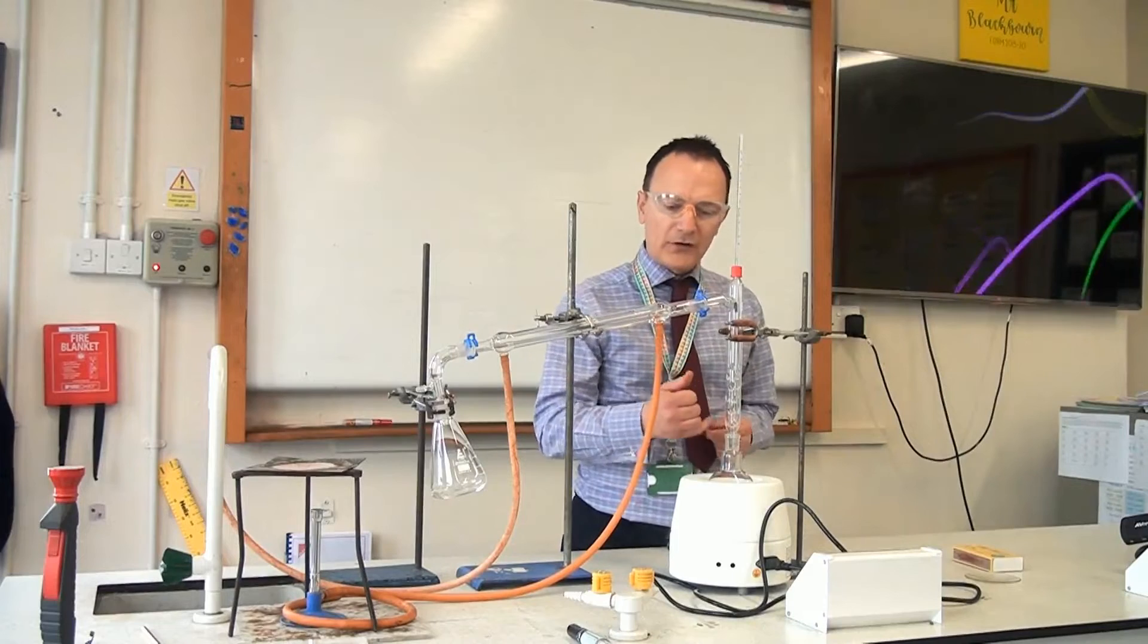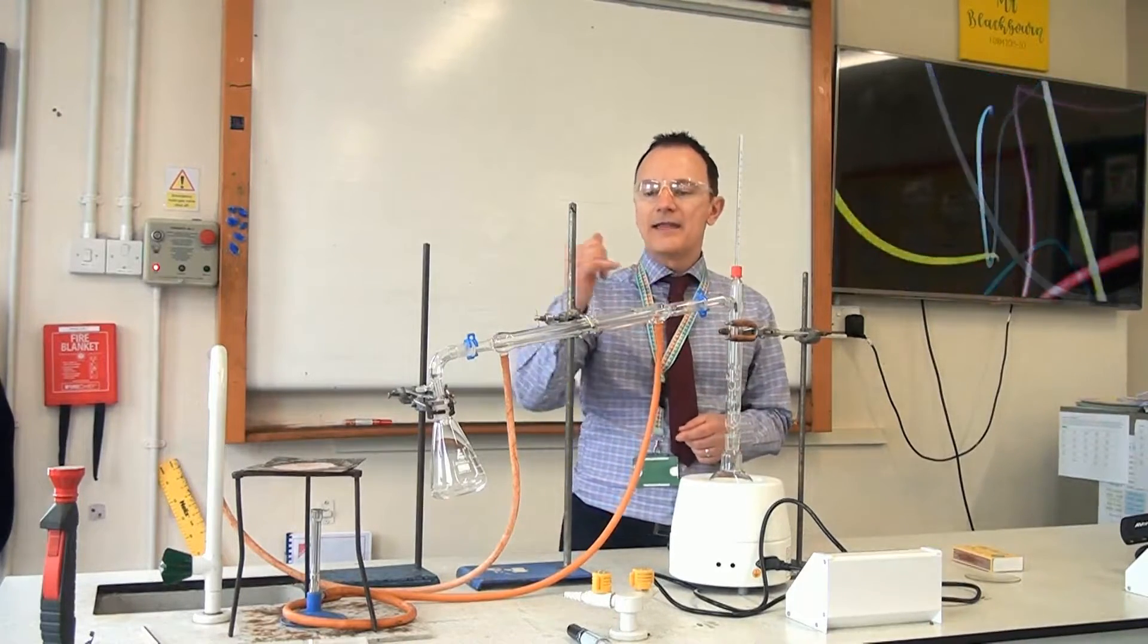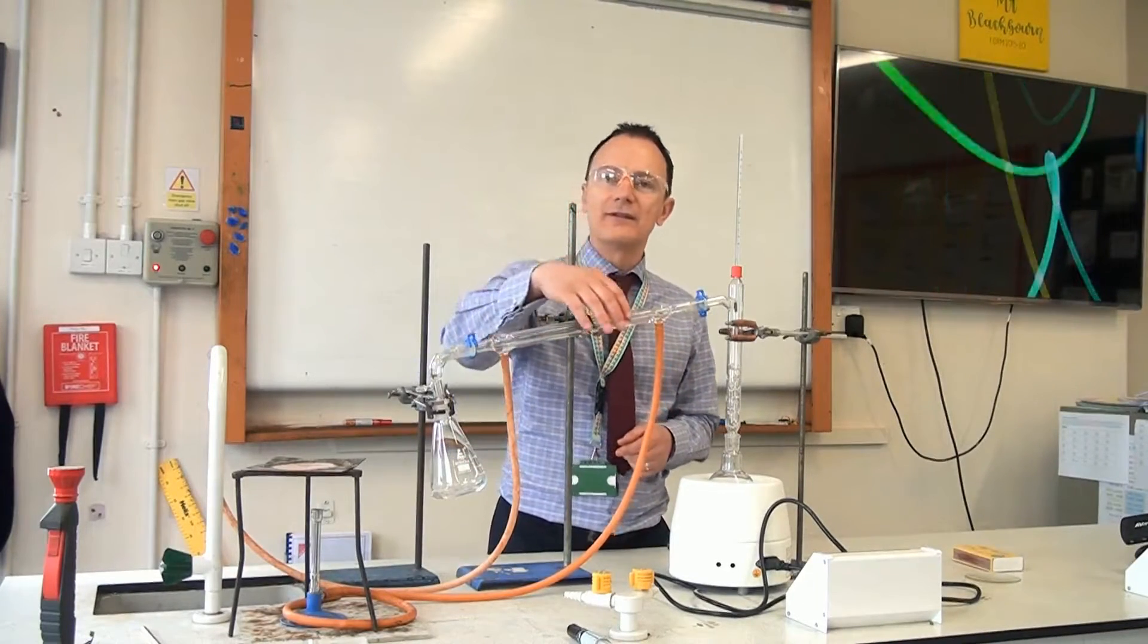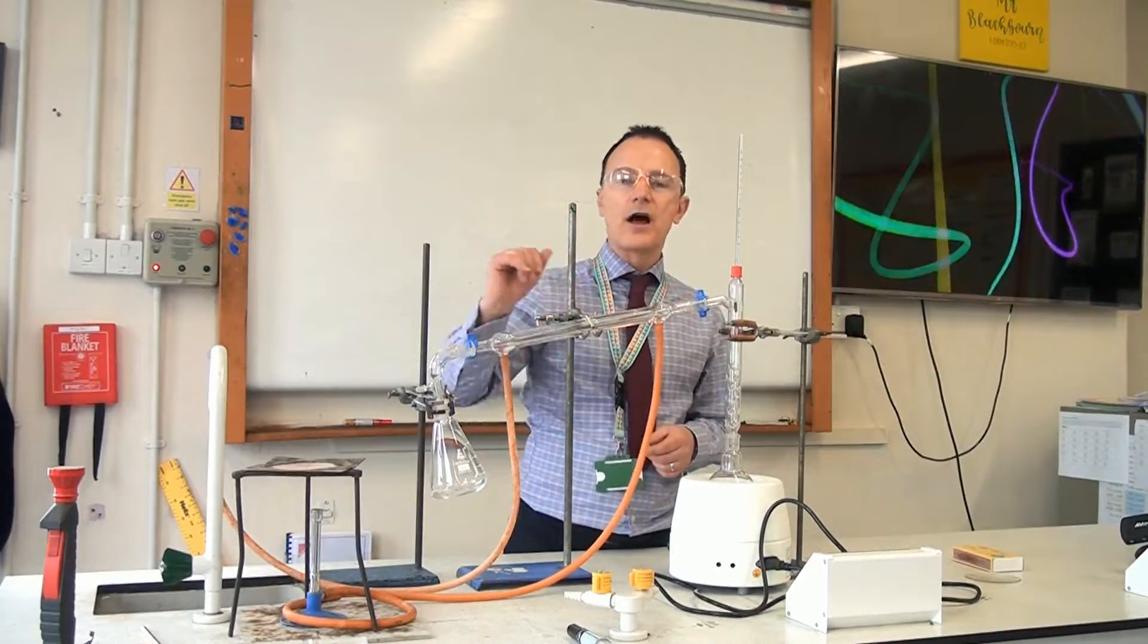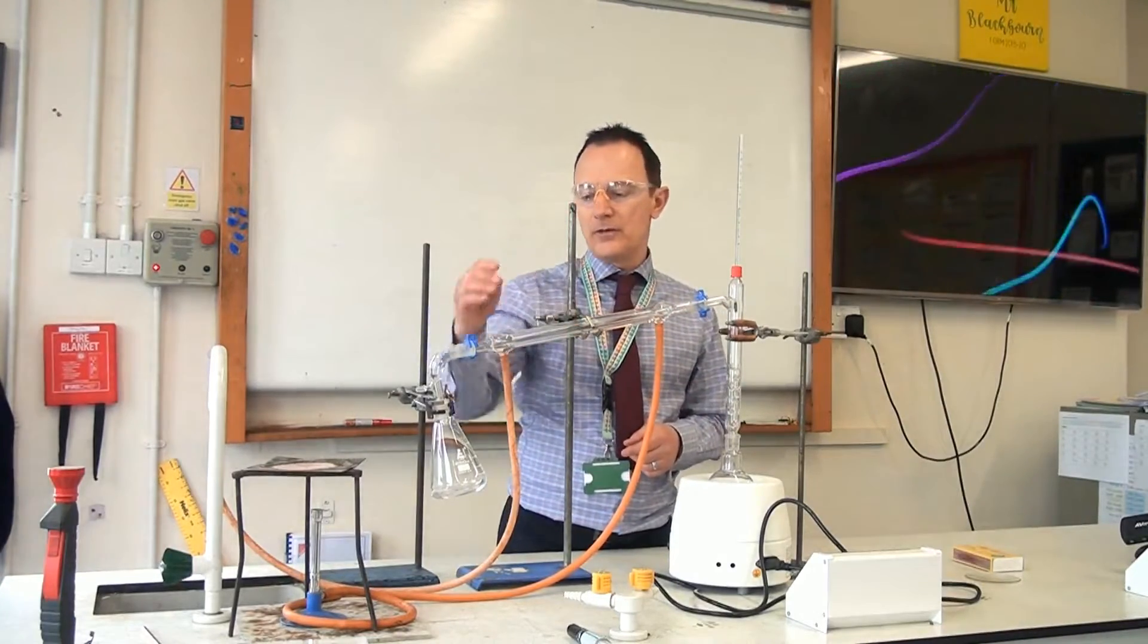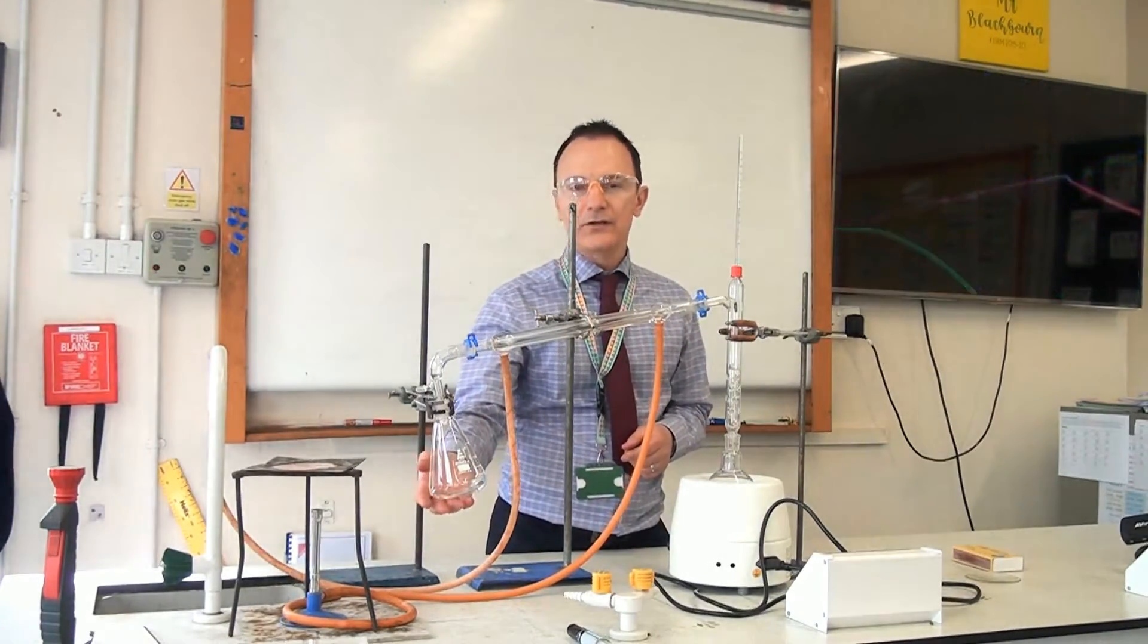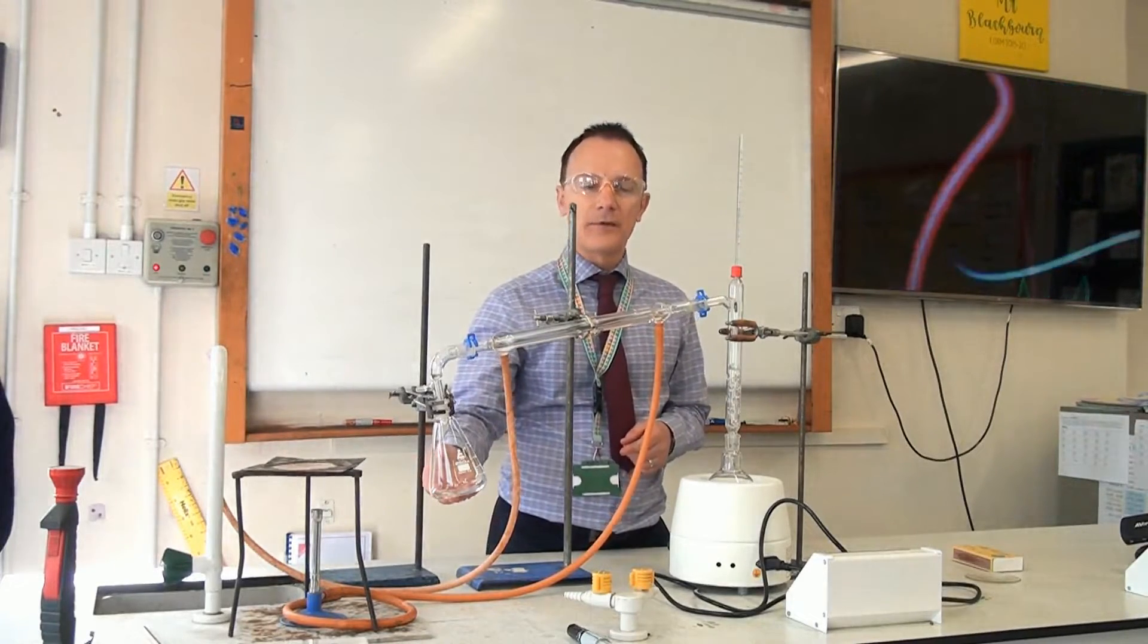So as soon as it starts to boil, there'll be the small hydrocarbons passing up here, and then they'll hit this cold tube. This is a liebig condenser which has water passing around it to keep it nice and cold. So those vapours of the hydrocarbons will hit this cold tube and collect in the flask here as a liquid. So this first fraction that we've collected, this first liquid, is going to be the shortest hydrocarbons.